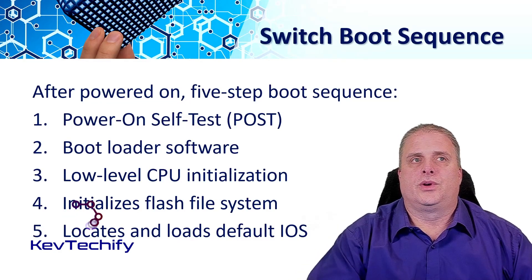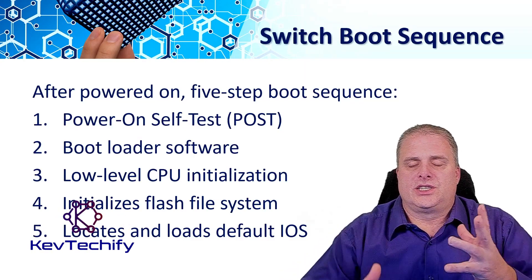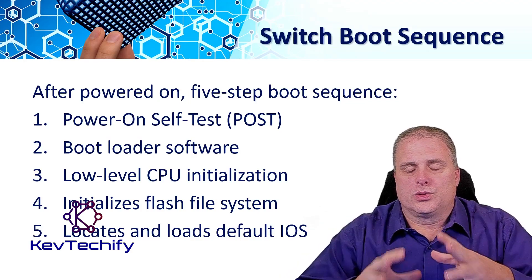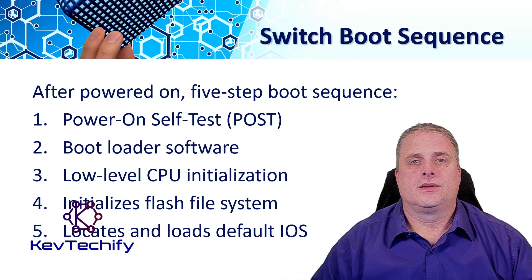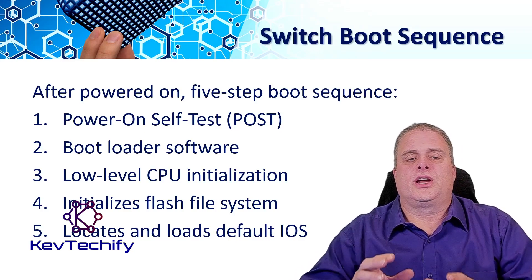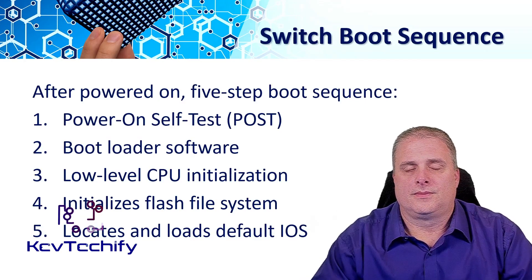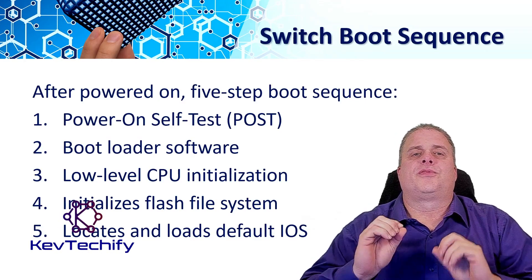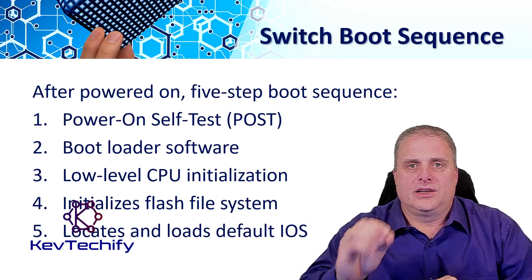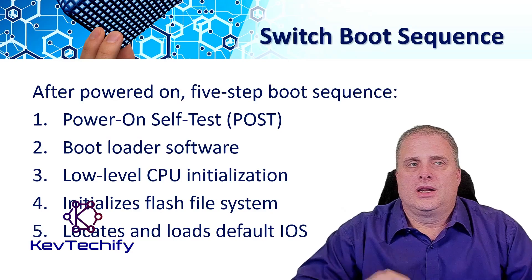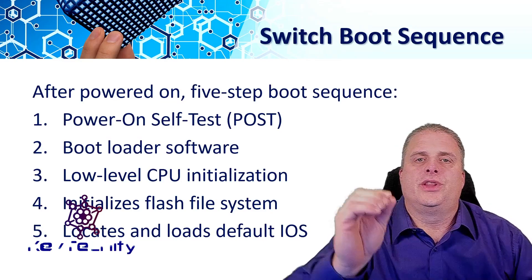For step number three, the bootloader software does low-level CPU initialization. It initializes the CPU registers and controls where the physical memory is mapped and the quantity of memory. In step four, the bootloader software initializes the flash file system on the system board. And finally, in step five, the bootloader loads the default IOS — the Internetwork Operating System software — into memory, and it gives control of the switch over to that IOS.